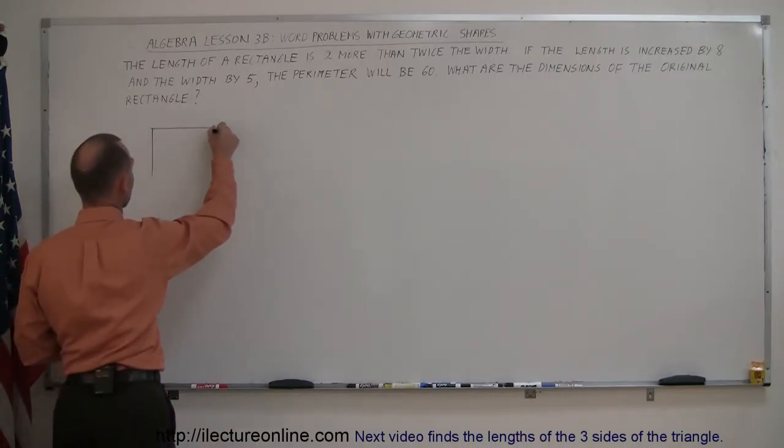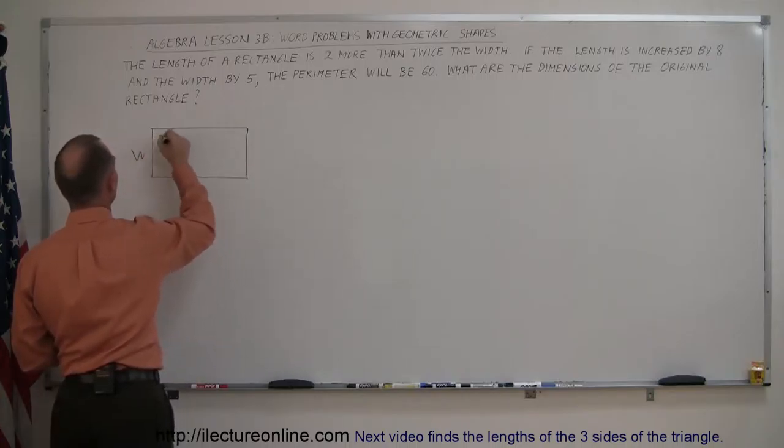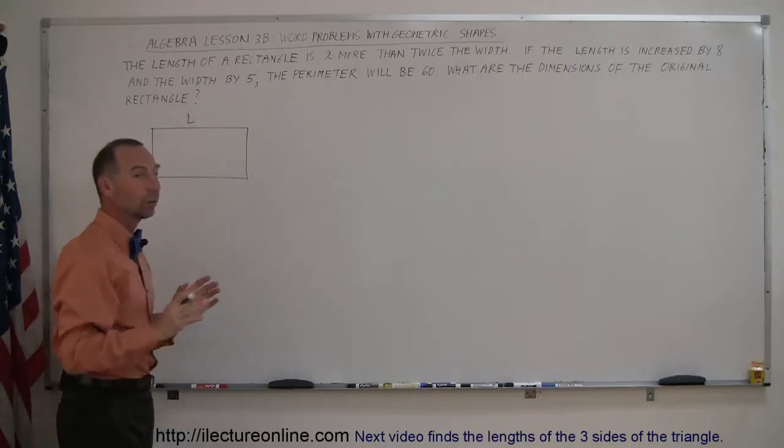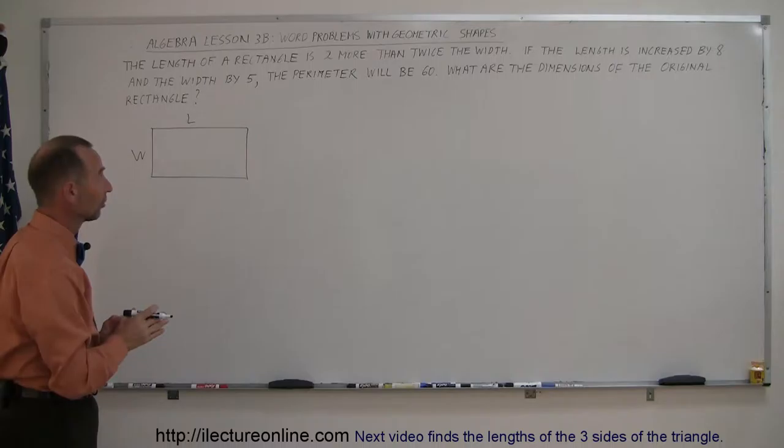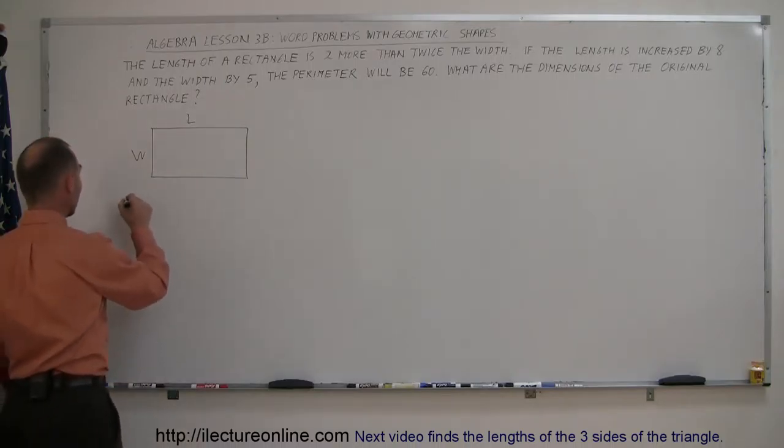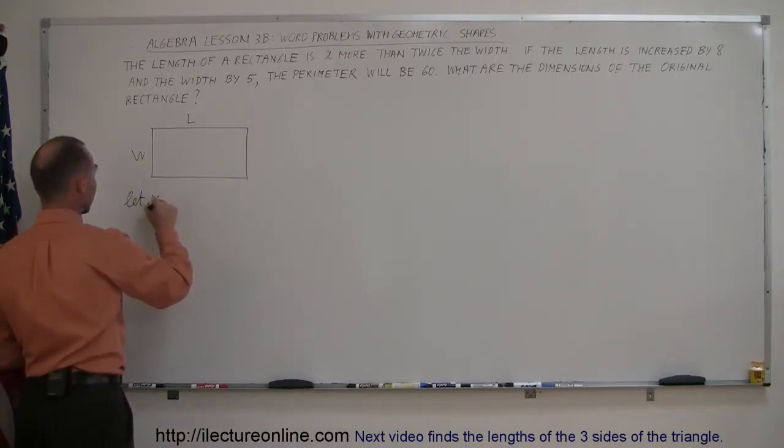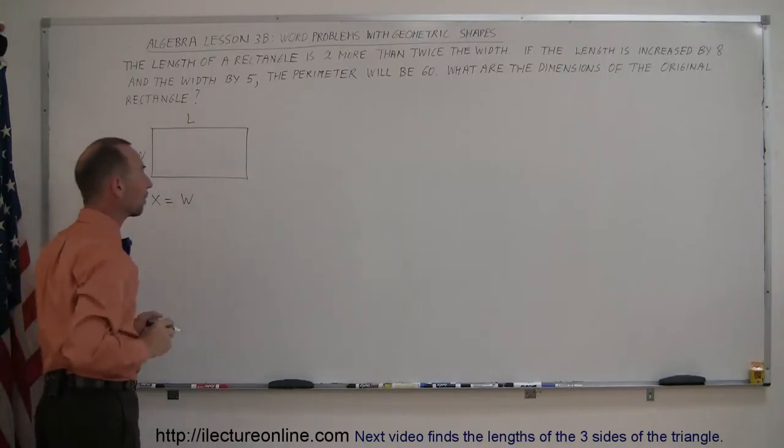So let's draw a rectangle. Here we go. Here we have the width, here we have the length. Now we have to define the width and the length in terms of x. So if we let x be the smaller quantity, the width, then how do we express the length?